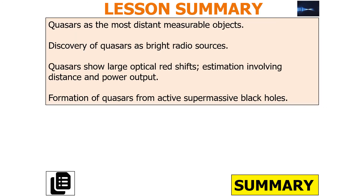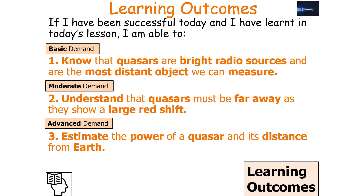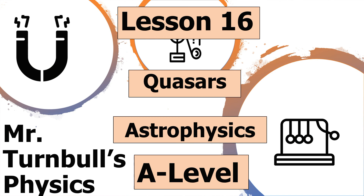In today's lesson we learned that quasars are the most distant measurable objects, discovered as bright radio sources. Quasars show large optical redshifts, and estimations of distance and power output can be calculated from given values. The formation of quasars occurs from active supermassive black holes. We should now know that quasars are bright radio sources and the most distant objects we can measure, understand that their large redshift indicates great distance, and be able to estimate the power output of a quasar and its distance from Earth. Thank you very much for watching, and have a lovely day.